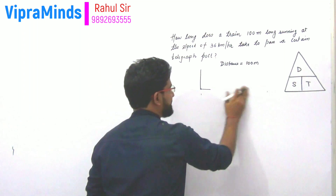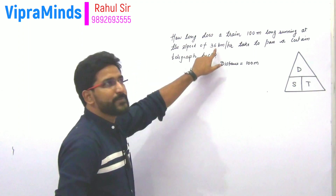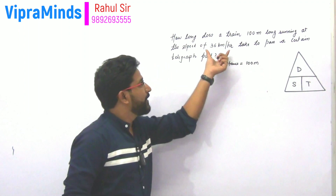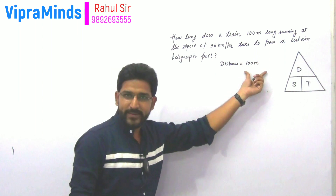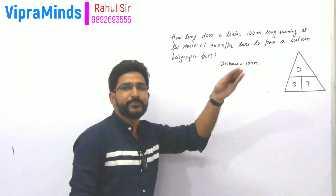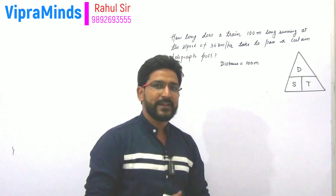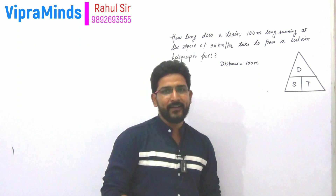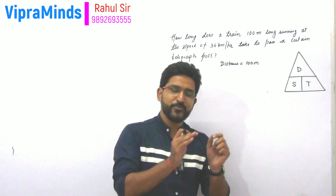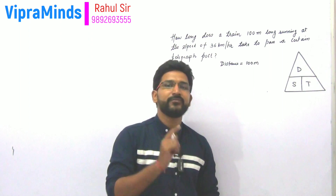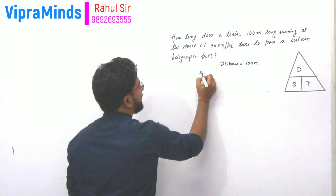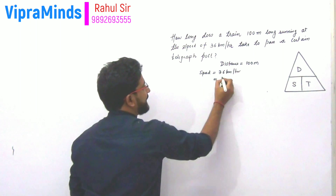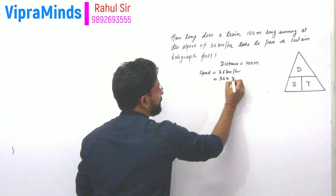We have the distance as 100 meters and the speed as 36 kilometers per hour. But the distance is in meters, so we need to convert the speed to meters per second. The conversion from kilometers per hour to meters per second is to multiply by 5/18. So 36 kilometers per hour multiplied by 5/18: 18 goes into 36 twice, and 2 times 5 equals 10.